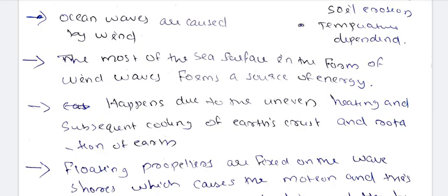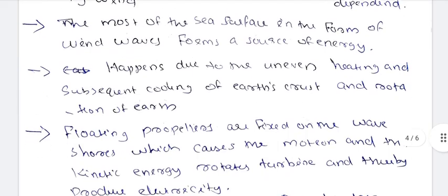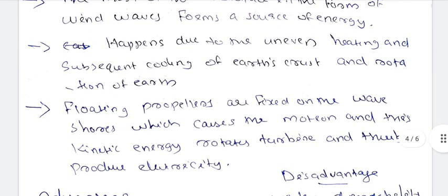Wind creates wave energy. Floating propellers are fixed on the wave surface, which causes motion. This kinetic energy rotates a turbine, thereby producing electricity.